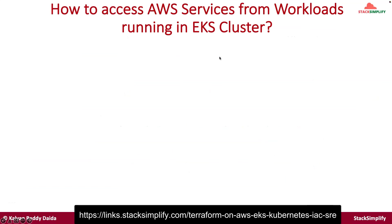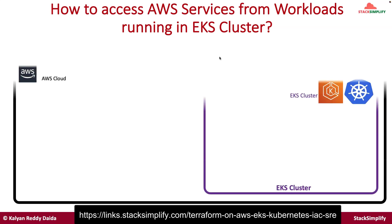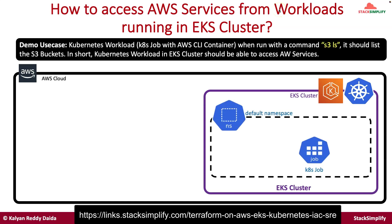Let's understand how to access AWS services from workloads running in an EKS cluster. You have a simple pod or job running in your EKS cluster, and that job or pod needs to access AWS services from your Kubernetes cluster. For example, you have an EKS cluster with a simple job that has an AWS CLI container, and you pass an argument to that CLI container: S3 LS. That CLI container should list the S3 buckets available in your AWS account.